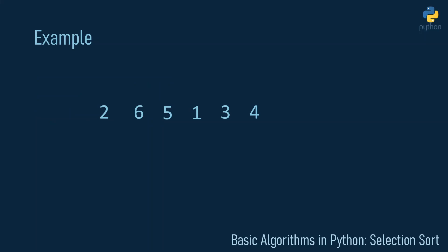Suppose we have this list of six numbers and we want to sort it. The general idea of selection sort is to find the minimum in this list and place it at the front. First we want to find the one and make it the first element, then find the two and make it the second element, so we can sequentially build up a sorted list.